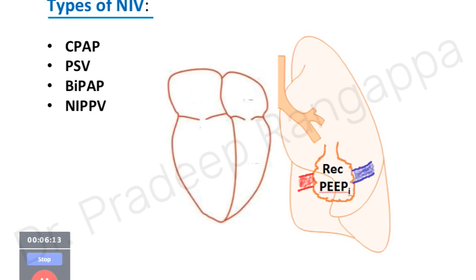There are four types of non-invasive ventilation, used with a complex interplay between modes: Continuous Positive Airway Pressure (CPAP), Pressure Support Ventilation, Bi-Level Positive Airway Pressure, and Non-Invasive Positive Pressure Ventilation. There is a lot of overlap between these modes, but these are the different nomenclatures used when employing non-invasive ventilation.